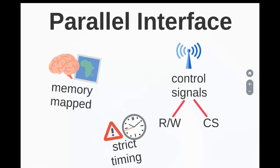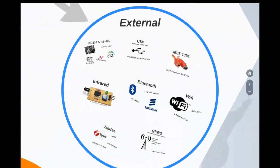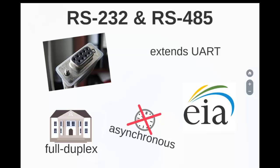Communication through the parallel bus is controlled by control signals interfaced between the device and the host. Control signals include read/write signals and device select signals. Strict timing characteristics are followed, and parallel communication is always initiated by the host processor. Moving to external communication protocols, the RS-232 or RS-445 protocol was developed by the Electronics Industries Association in the early 1960s. It extends UART, following full-duplex and asynchronous communication. The connectors used are either the DB9 or DB25 pin connectors.